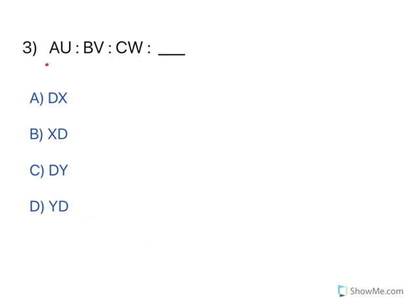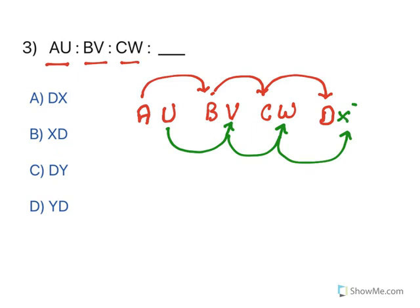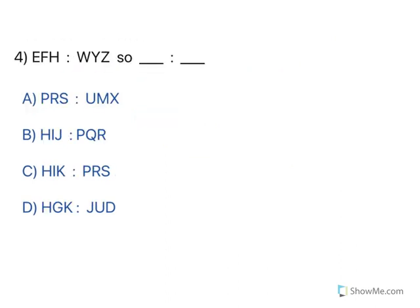Moving to the next one. Look at this: A-U-B-V-C-W. There are two alphabets in each pair. After A comes B, after B comes C, so after C it must be D. For the second series: after U is V, after V is W, so after W it has to be X. So the answer is D and X. You need to find out the pattern. Very easy type questions — the only thing is you need to find out what the particular pattern is.